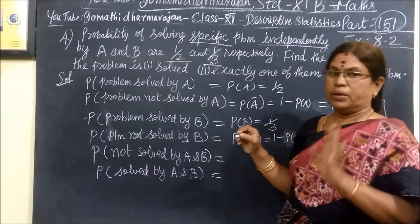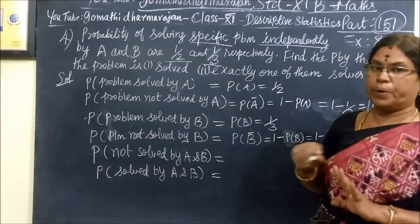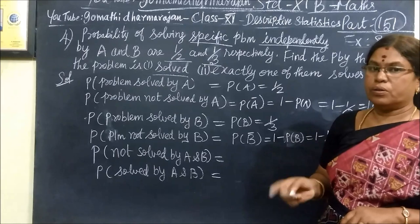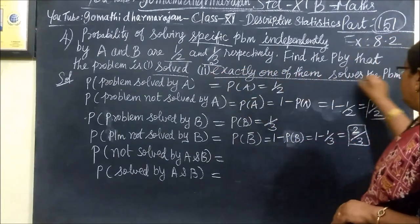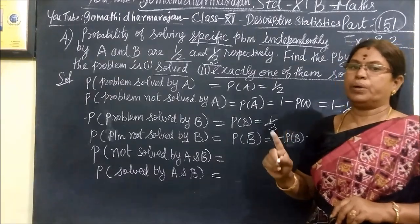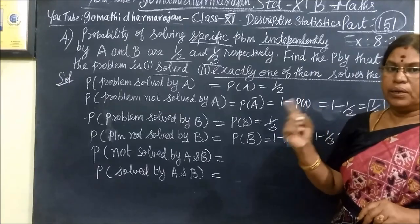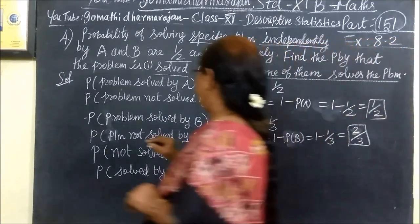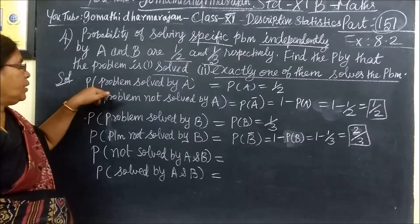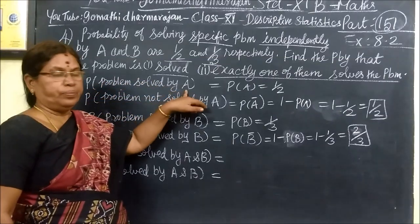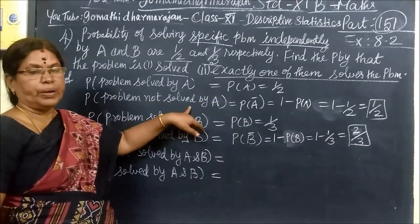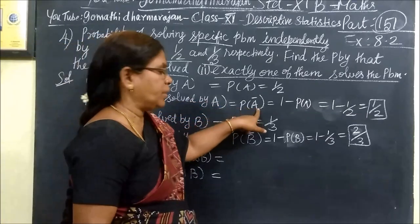First question is: two people will solve the problem, one person will solve the problem. If we solve the problem, we also solve exactly one of them solved the problem. If we solve the problem, one person will solve the problem. A bar in form, you can understand the way.